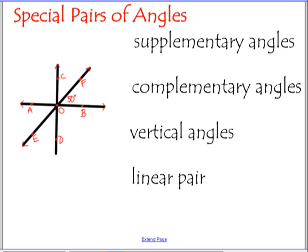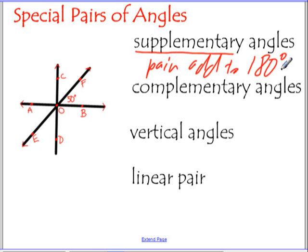Special pairs of angles. So hopefully you're familiar with these. I'm going to go really quick. Supplementary angles are a pair of angles that add to 180 degrees. They can be next to each other or not. Complementary angles are a pair that add to 90 degrees.